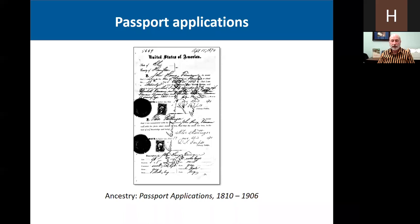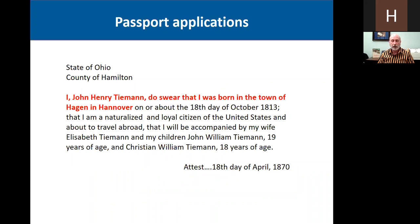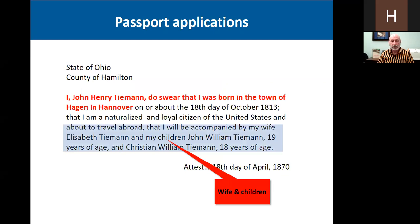Passport applications are another source. These are on Ancestry from 1810 to 1906. Here's an example from the state of Ohio, County of Hamilton — probably Cincinnati. It states: I, John Henry Thiemann, do swear that I was born in the town of Hagen in Hanover — the Kingdom of Hanover, not the city of Hanover. What's also interesting about this passport is that it also lists his wife and children, so there you have the whole family group together.